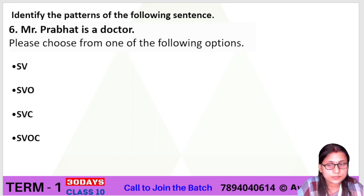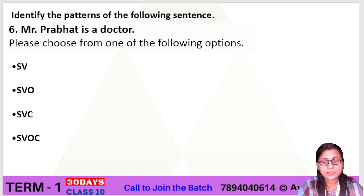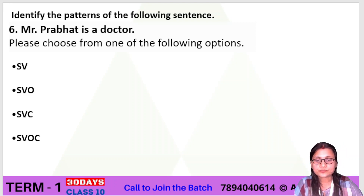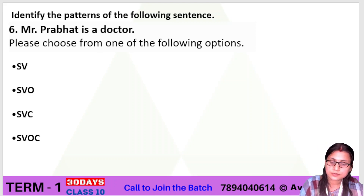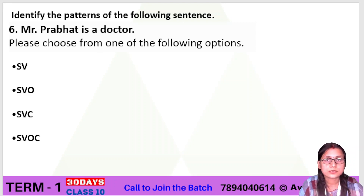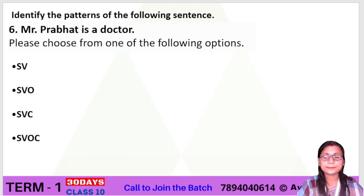The question is: 'Mr. Pravath is a doctor.' You should choose the correct alternative — number one: SV, number two: SVO, number three: SVC, or number four: SVOC. Here, SV stands for Subject and Verb; SVO stands for Subject, Verb, and Object; SVC stands for Subject, Verb, and Complement; and SVOC stands for Subject, Verb, Object, and Complement. Quickly write down the correct answer.